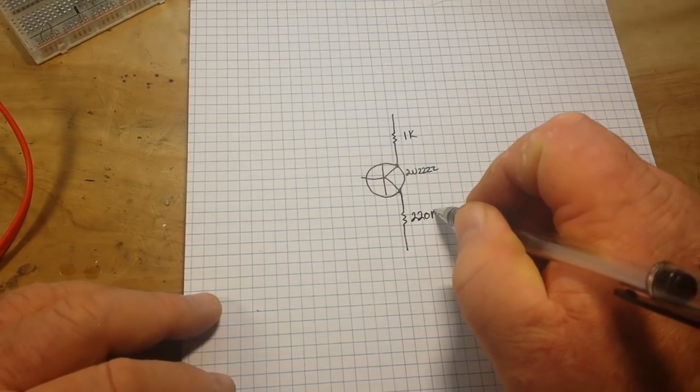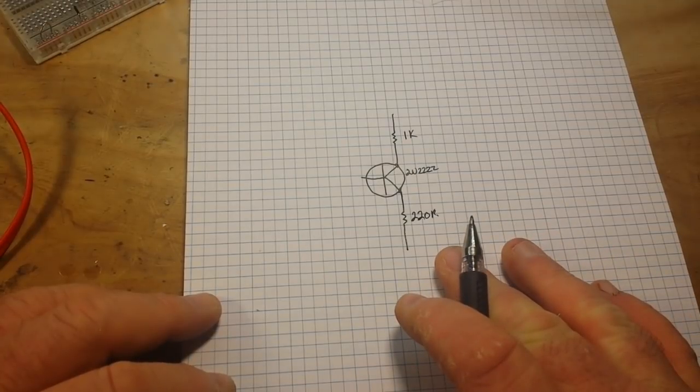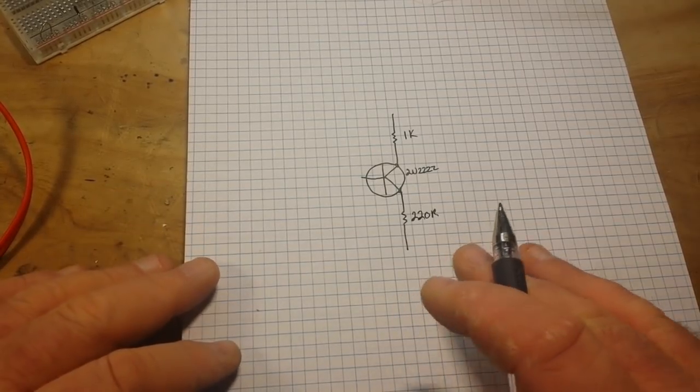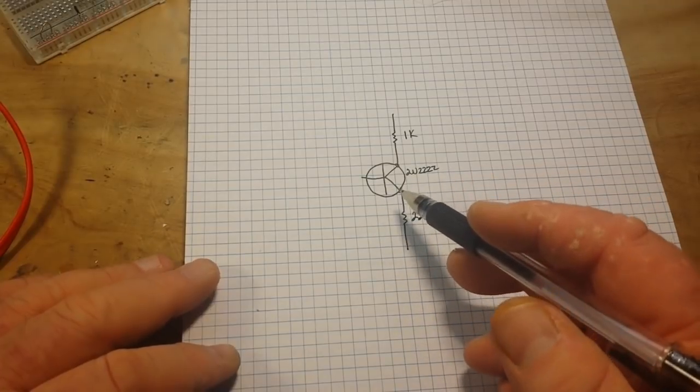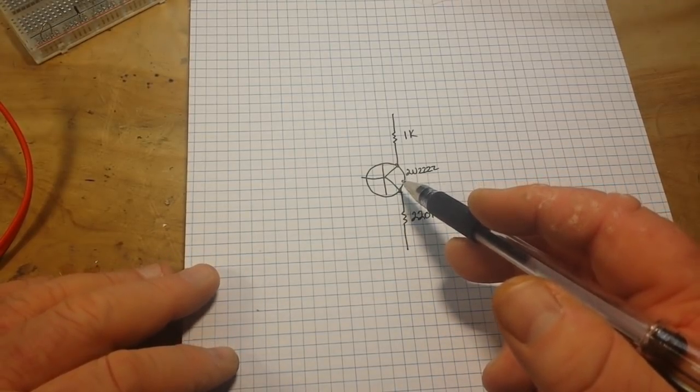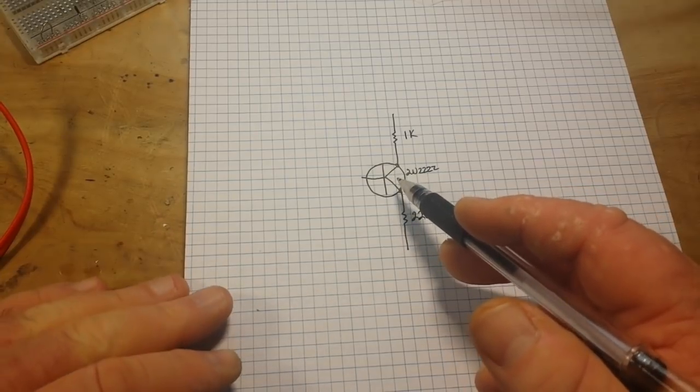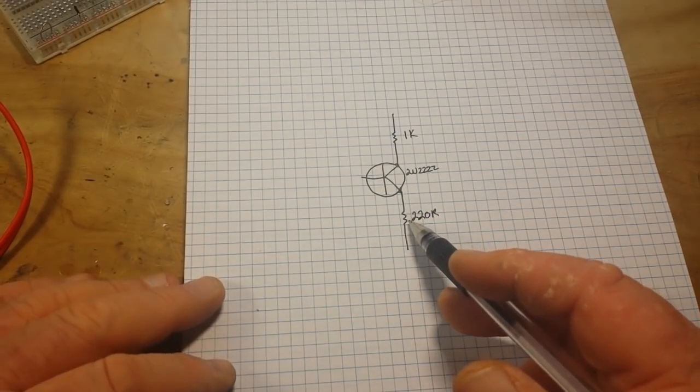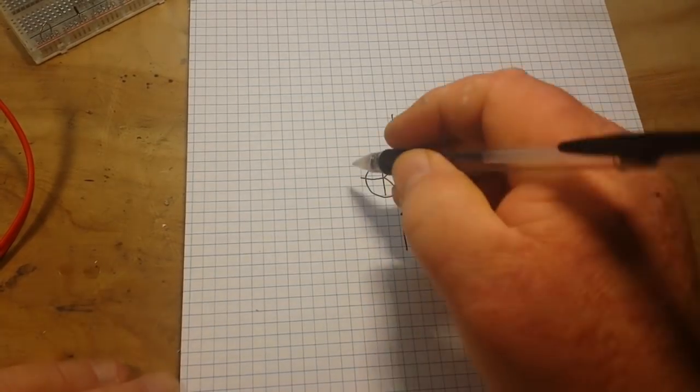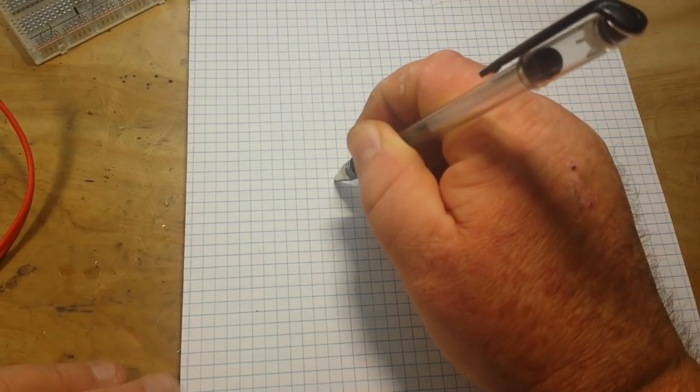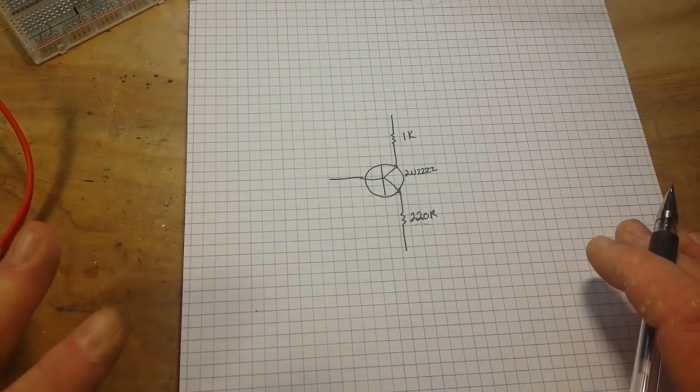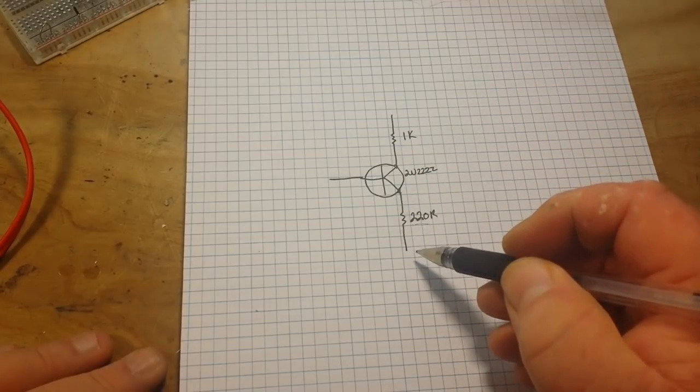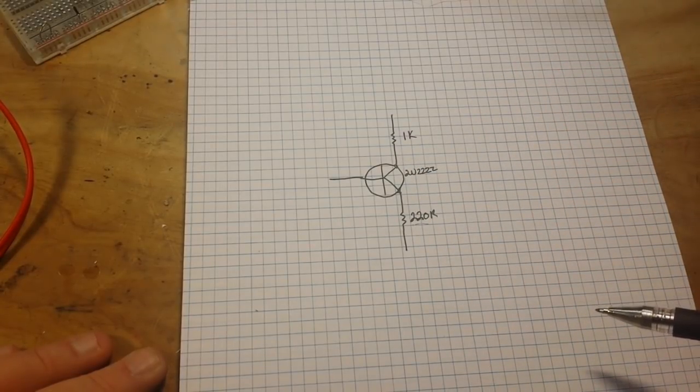Now remember the point of the emitter resistor is to prevent thermal runaway, because what happens when you're doing this class A amplification is the harder the transistor drives the hotter it gets, and the hotter it gets the harder it can drive. So it gets into this vicious loop where it'll just burn itself out. We just limit the amplification here with a resistor. Next, our signal comes in through the base. The signal comes in through the base, it creates a larger current flow from the collector to emitter junction, and that's where our amplification comes from.